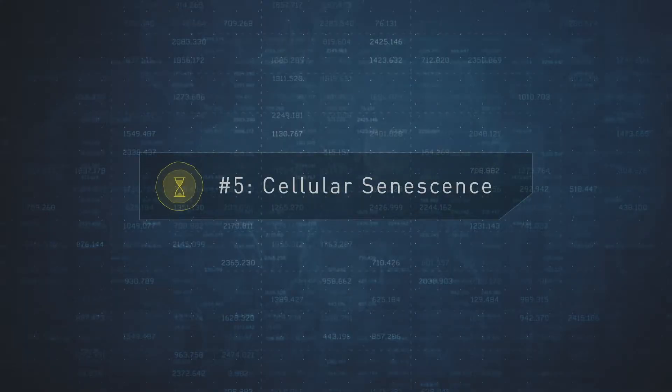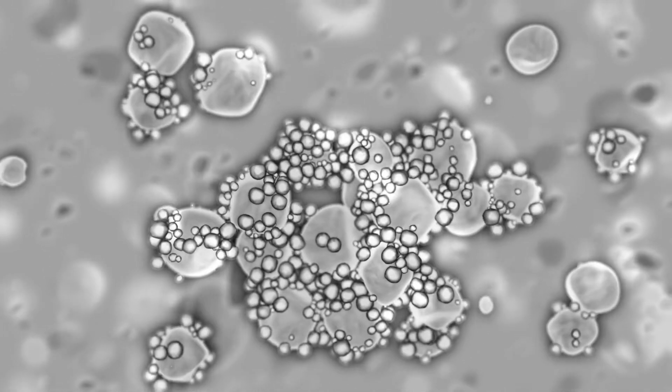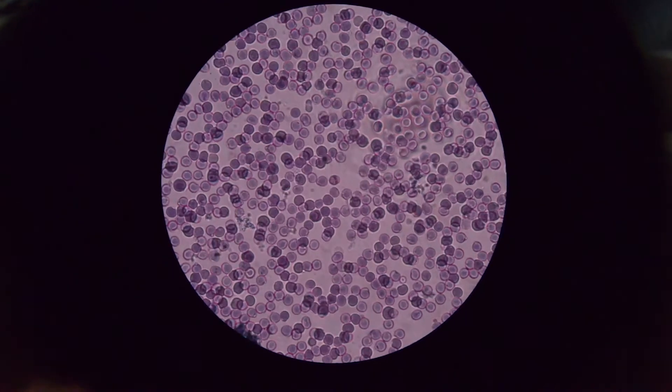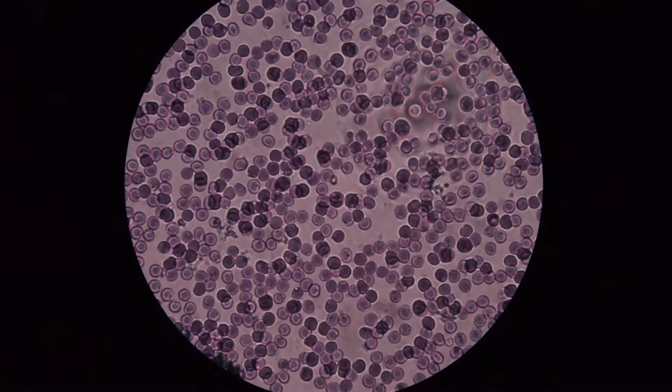Fifth, cellular senescence. A senescent cell is a cell that reached the end of its cycle, which means it can no longer replicate itself. Senescence is a good thing because it stops damaged cells from replicating and becoming cancerous. However, with time and age, the elimination mechanisms become less effective and senescent cells accumulate. The accumulation of senescent cells might be linked to many age-related diseases such as arthritis and cancer.